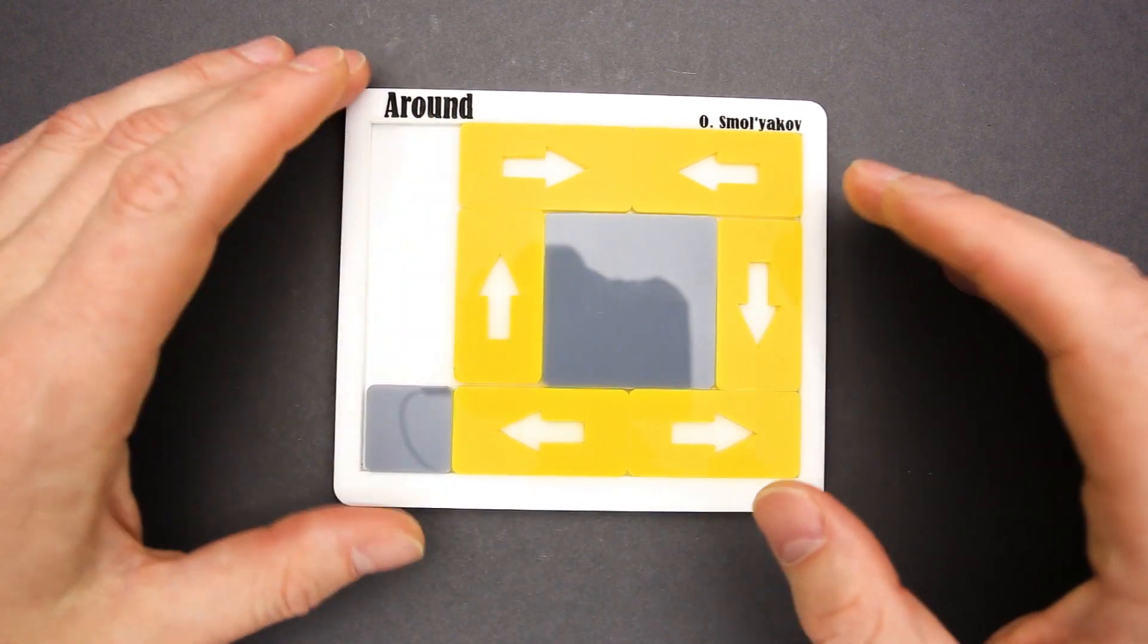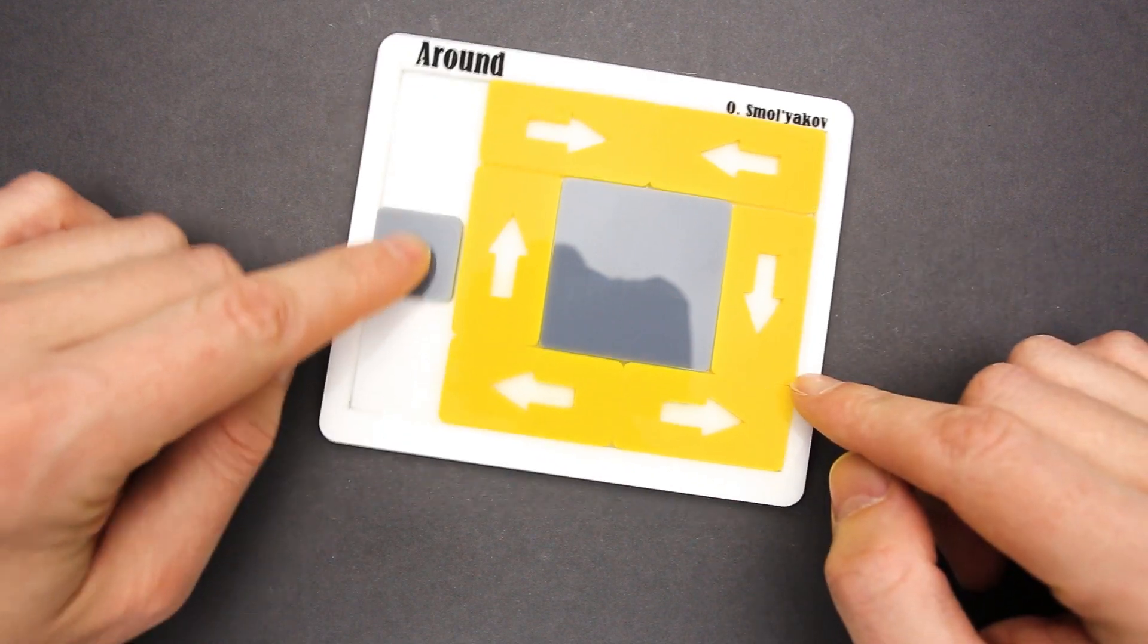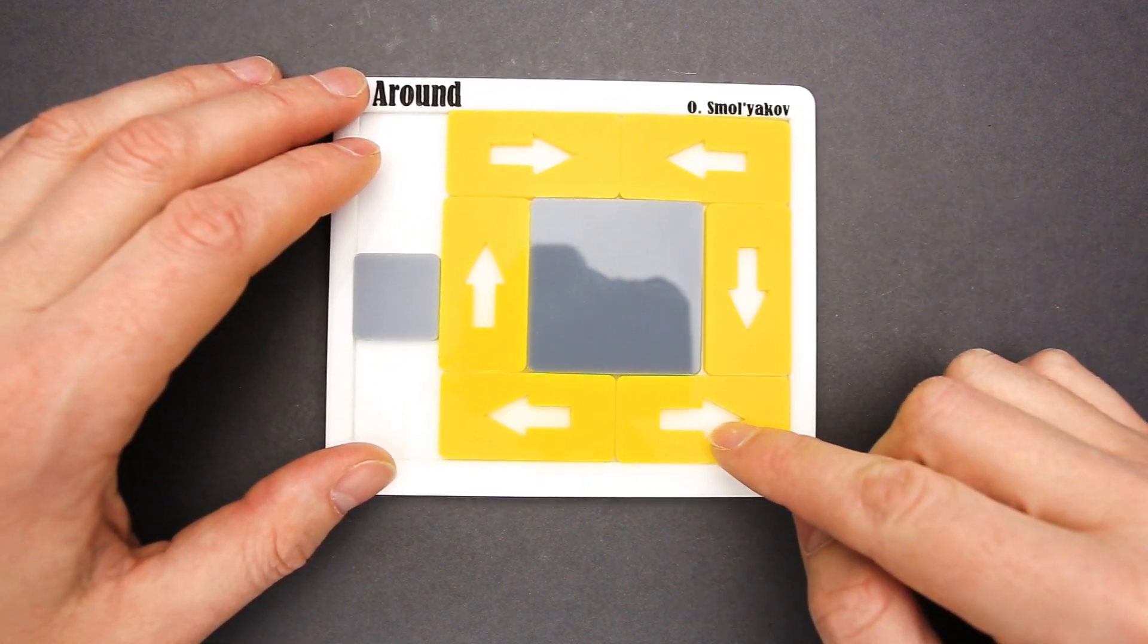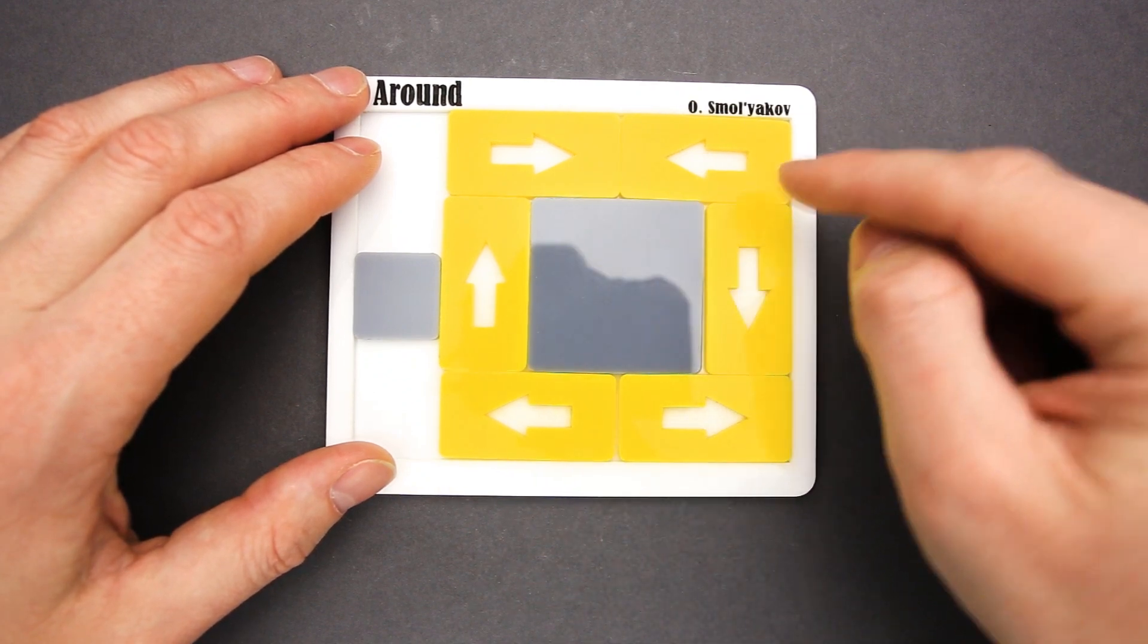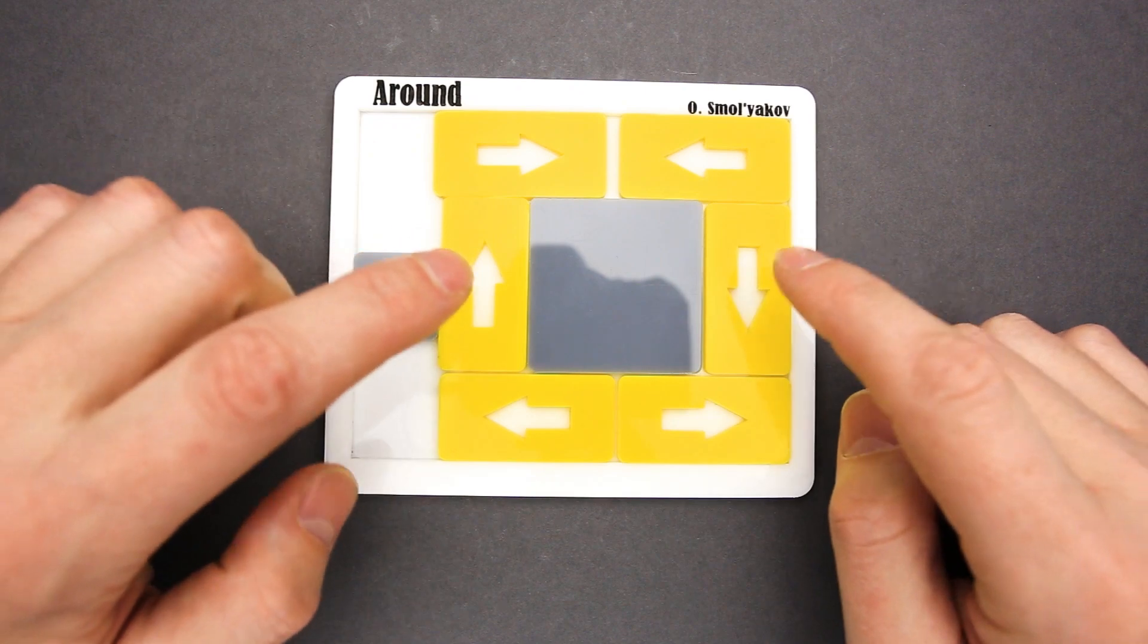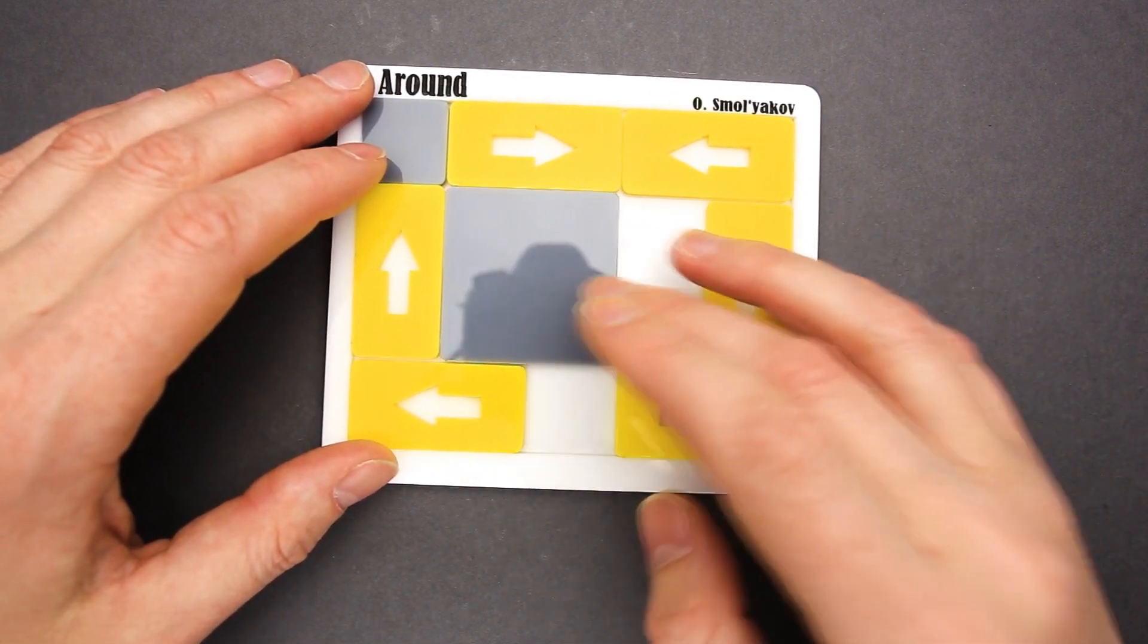What have I done now? The small square is on the left side instead of the right one. Some of the arrows are facing the correct direction. They're facing to the left now, this one and this one, but I have to switch places of these two and these two. Let's try again.